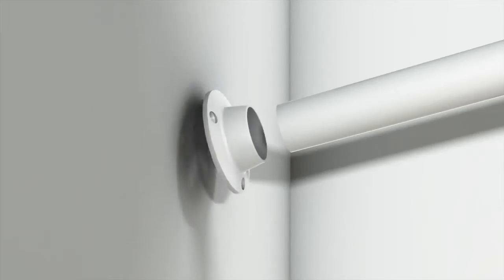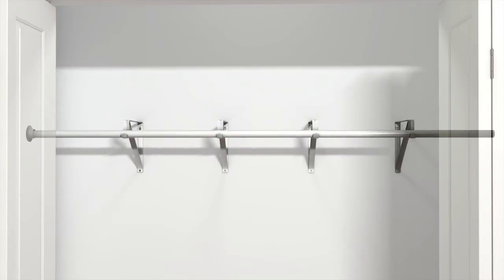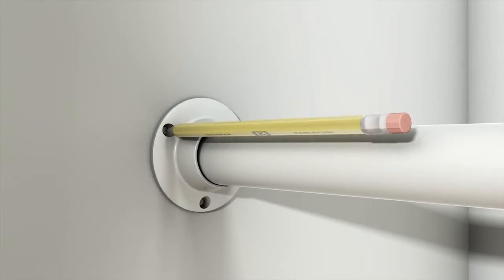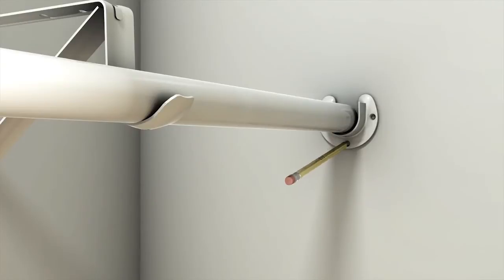Step 3. Lay the closet pole onto the installed brackets with a pole socket on one end. Mark the pole socket screw locations. Slide the other pole socket into place and mark screw locations.